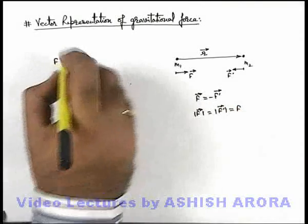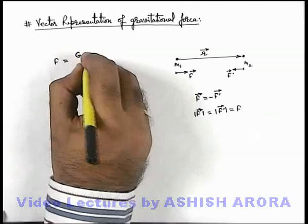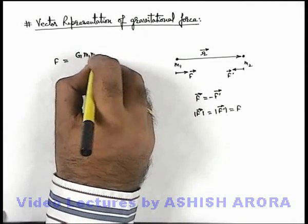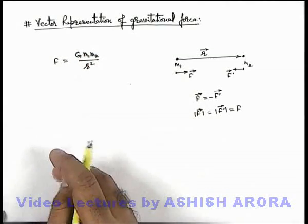And say this is equal to F, then the magnitude can be written as simply G m1 m2 by r square according to Newton's law of gravitation.